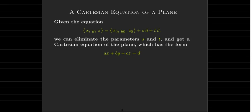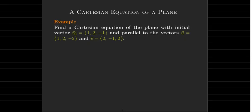The vector equation is a bit awkward. We can actually eliminate the parameters and get a Cartesian equation, which looks like AX plus BY plus CZ equals D. Let's look at an example. We're given an initial vector with components 1, 2, negative 1, and our two vectors are U with components 1, 2, negative 2, and V with components 2, negative 1, 2.